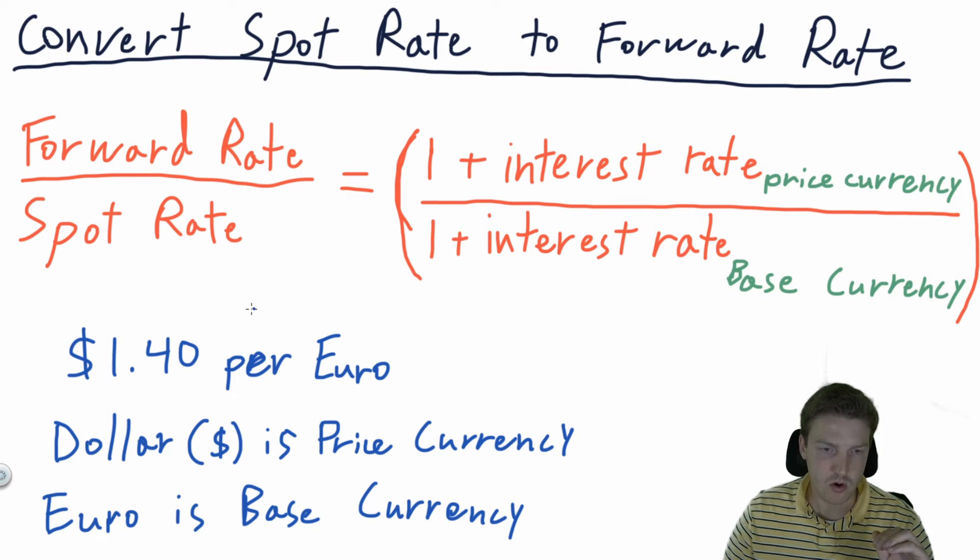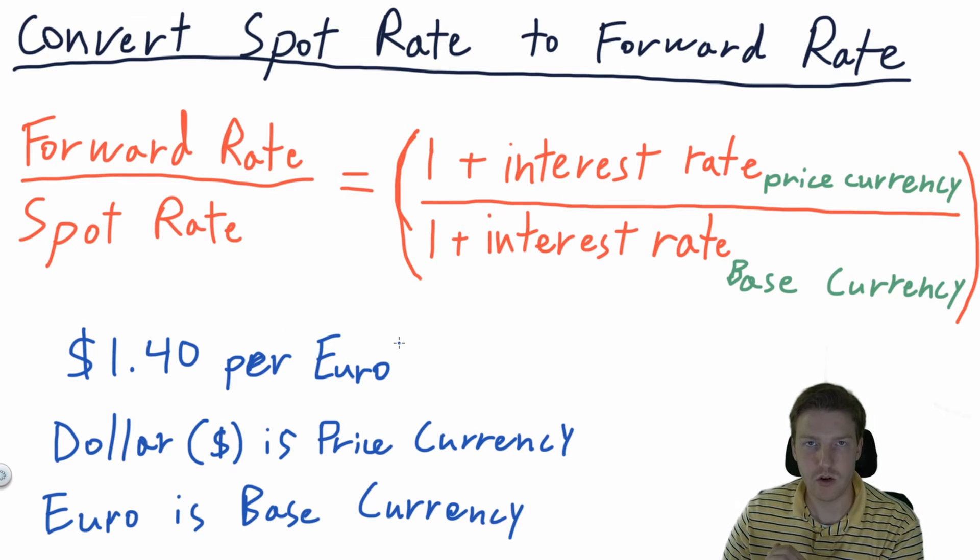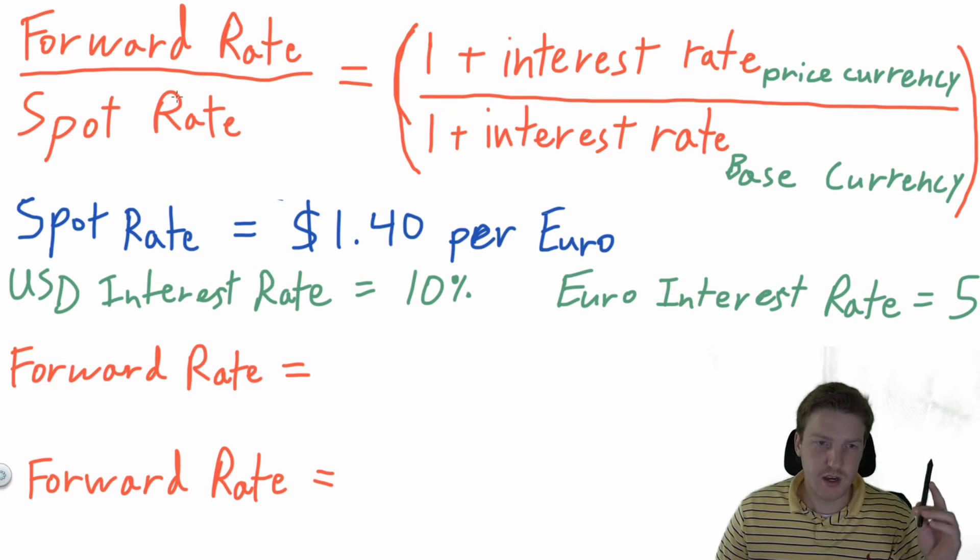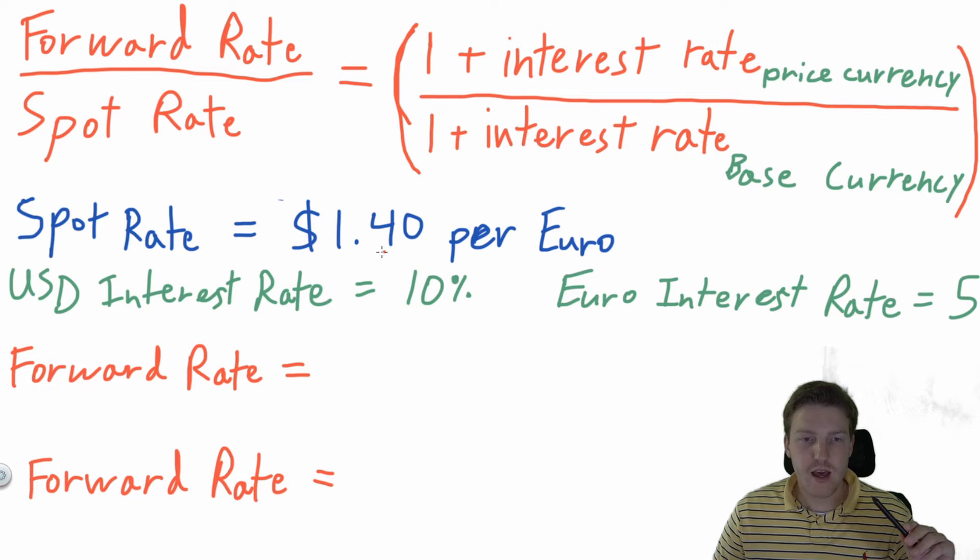Now let's talk about what the price currency and the base currency is. So if we have a quote right here of $1.40 US dollar per euro, then our price currency is the US dollar and our base currency is the euro. So we're given the price in dollars for the base of one euro. All right, now let's work this formula once in an example.